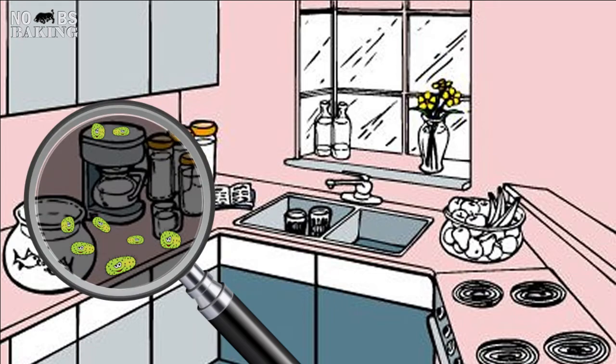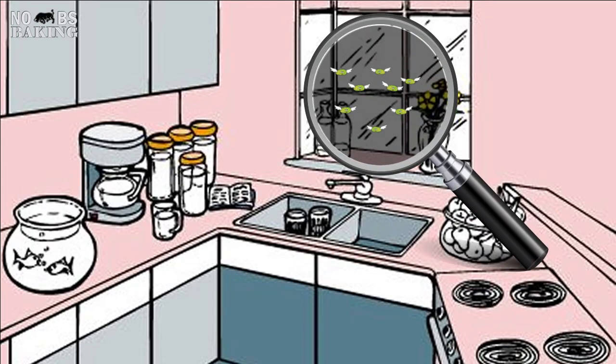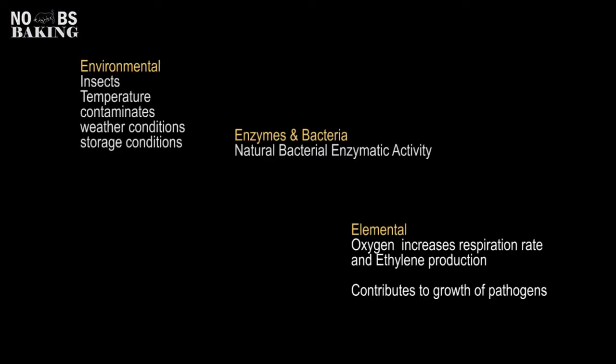These spores can and do travel in the air we breathe, so instead of thinking we can eliminate contamination, the best we can do is attempt to control it. Spoilage can also occur as a result of other factors such as environmental, enzymatic, and elemental effects on food products. However, in this video we'll discuss common preservatives used in baking items and ingredients.